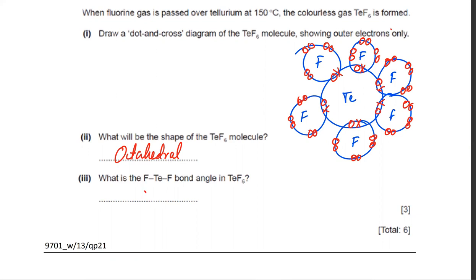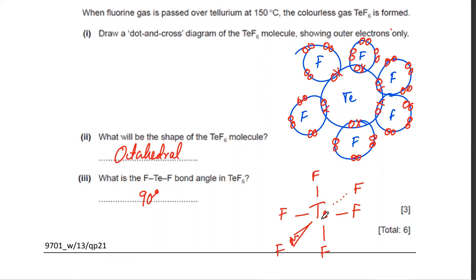TeF6 has one F on the right, one on the left, one on top, one at the bottom, one behind, and one in front — all angles are 90 degrees.